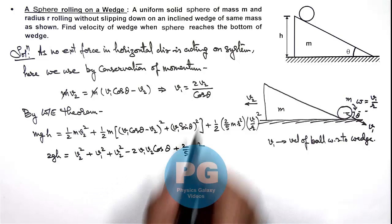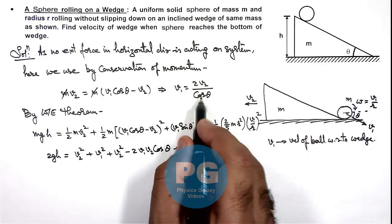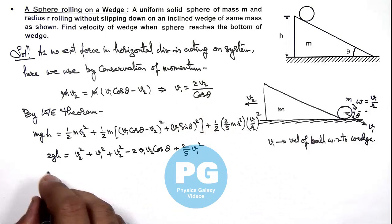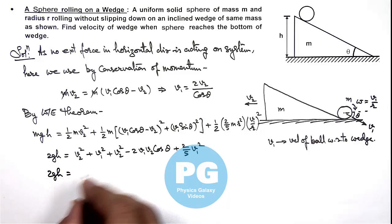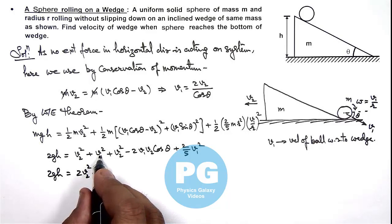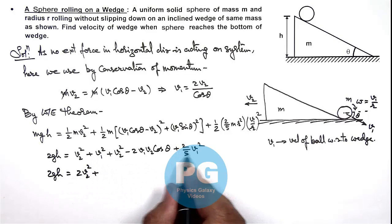Now for v1 we can substitute the value in terms of v2 from this equation. This gives us 2gh is equal to here this will be 2v2² plus v1² plus v1² plus (2/5)v1². We can write as (7/5)v1².